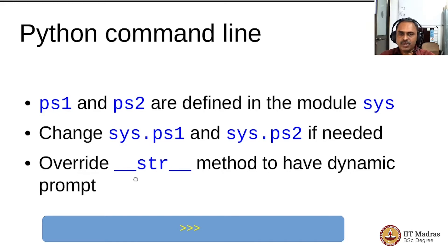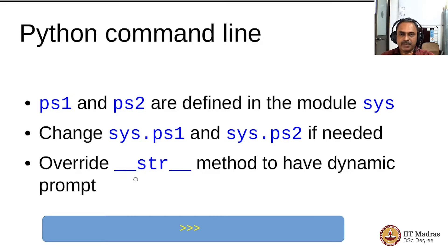In the case of the Python command line, PS1 and PS2 are defined in the module sys. They can be modified as part of your code, and by overriding the string function you can also make it dynamic. By default, the Python command line prompt is three greater-than symbols.